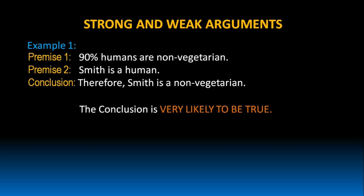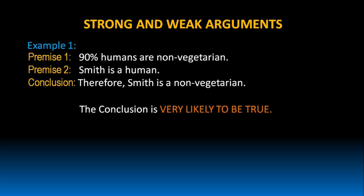In this argument, the conclusion is very likely to be true. Why do I say that the conclusion is very likely to be true? Because premise 1 says 90% humans are non-vegetarian. 90% is a very high value. So from this premise, we can conclude that Smith is a non-vegetarian because he is a human being. So we treat this argument as a strong argument.